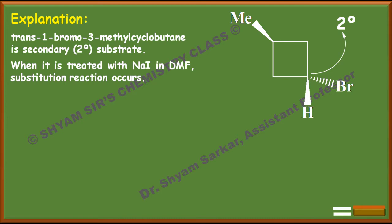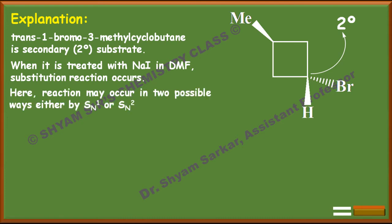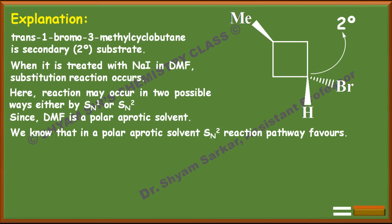This substitution may occur in two possible ways: either by SN1 or by SN2. You have to look at the solvent. Here DMF is given. DMF is a polar aprotic solvent, and in a polar aprotic solvent, the SN2 reaction pathway is favored.